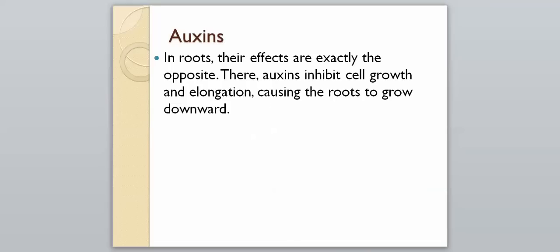And then in roots, their effects are exactly the opposite. There, auxins inhibit cell growth and elongation, causing the roots to grow downward. So that's kind of making it go with gravity. Things are supposed to go down. So in roots and in stems, they have opposite effects, causing them to go different ways relative to gravity.